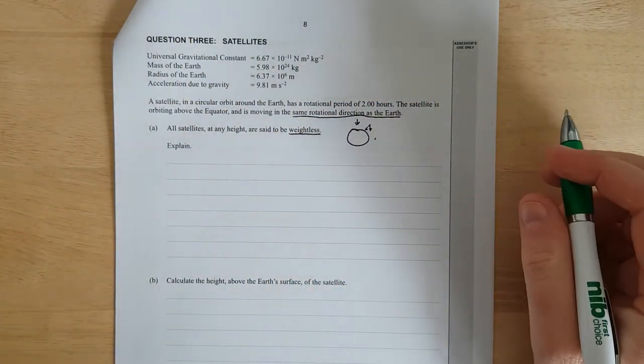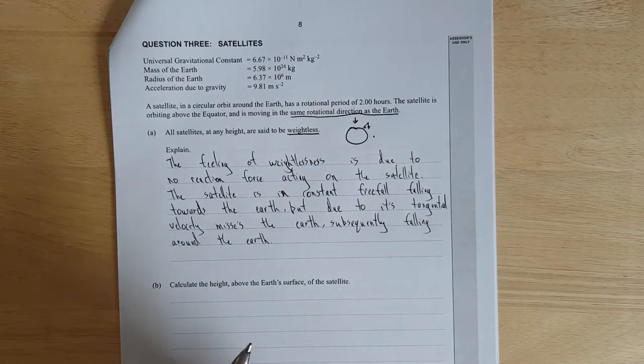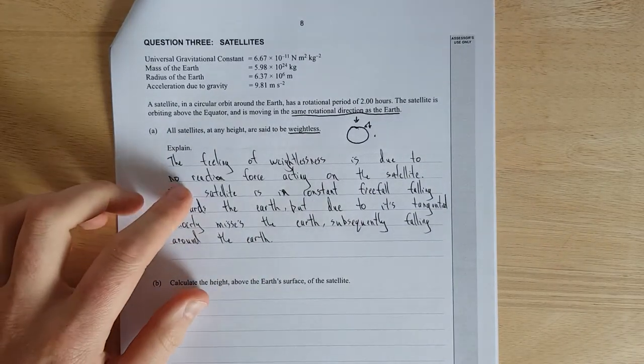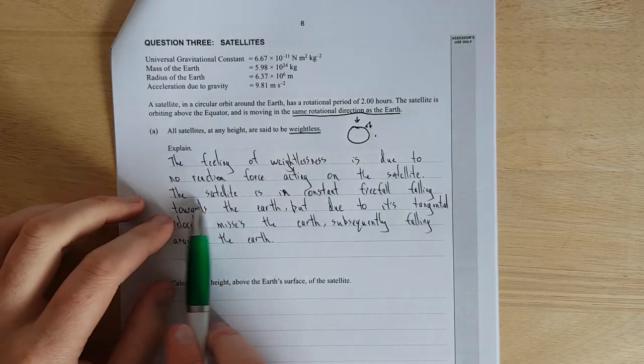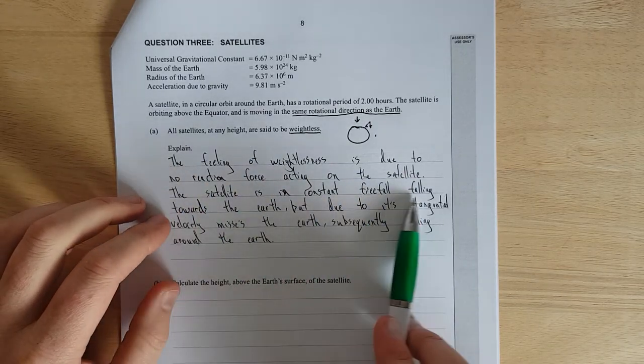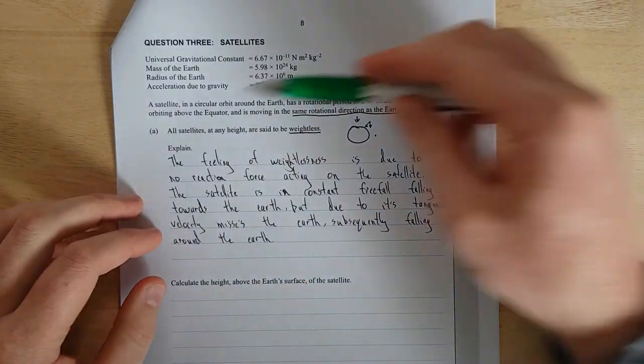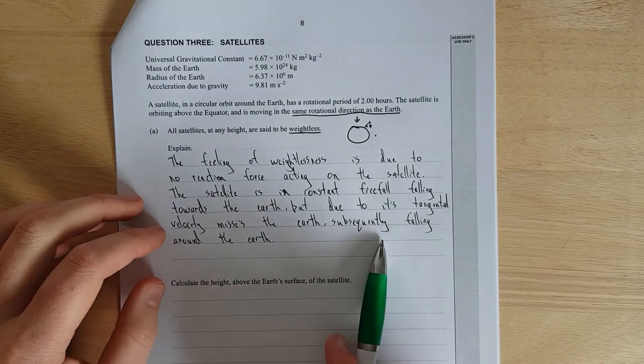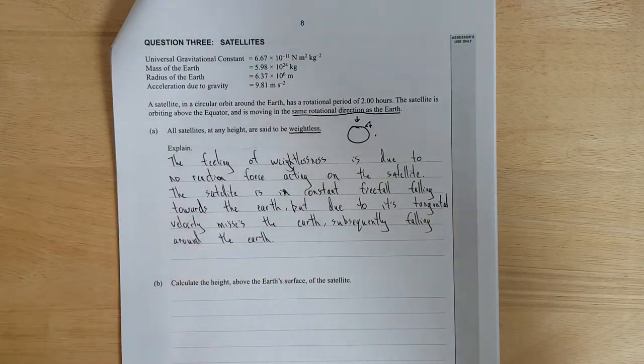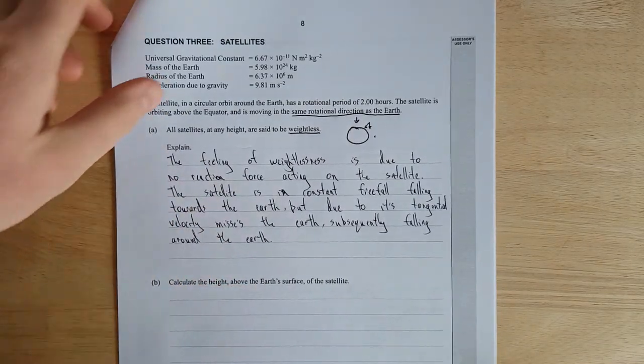So I'll just pause it and write it out semi-coherently. Right, so I've said the feeling of weightlessness is due to no reaction force acting on the satellite. That's pretty much the answer. I added this other stuff as well. The satellite is in constant free-fall, falling towards the Earth, but due to its tangential velocity, so it's like sideways velocity, misses the Earth, subsequently falling around the Earth. That's pretty much it. I don't know if this is the best answer, but that's the gist of it anyway.